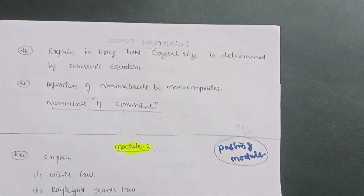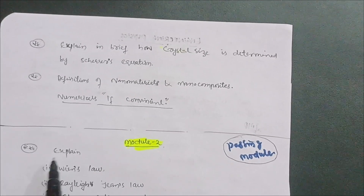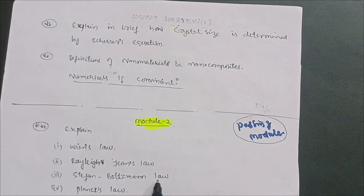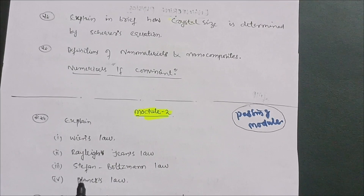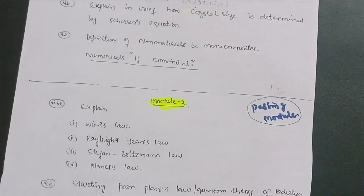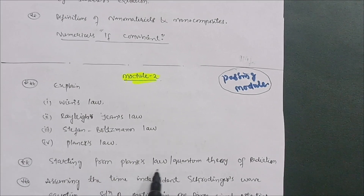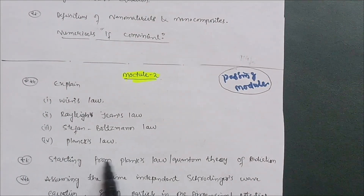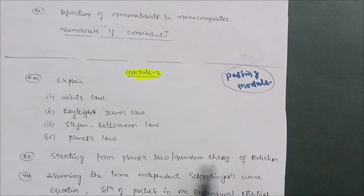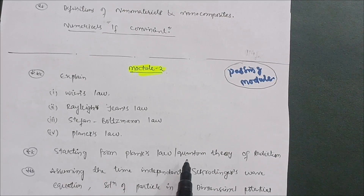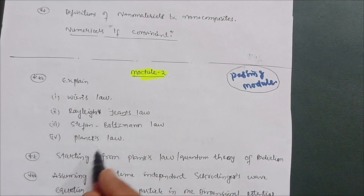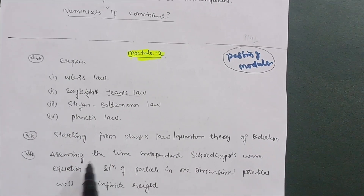Module 2 is also a passing module. The important questions here are: explain Wien's law, Rayleigh-Jeans law, Stefan-Boltzmann law, and Planck's law — these four laws, focusing on the definition and explanation. Sometimes the question will be phrased as 'starting from Planck's law' or 'starting from quantum theory of radiation, arrive at Rayleigh-Jeans law.' So you need to be able to derive Rayleigh-Jeans law starting from Planck's law.